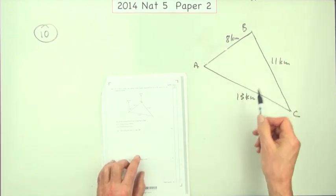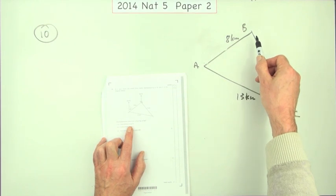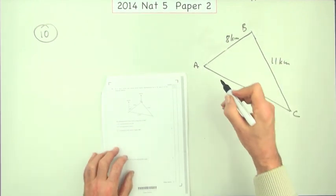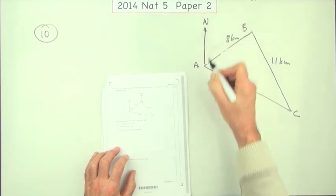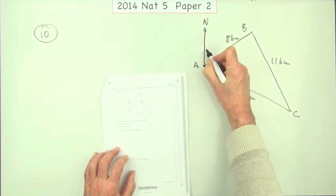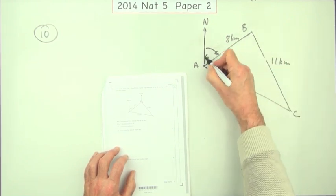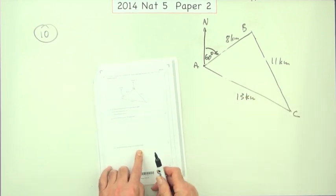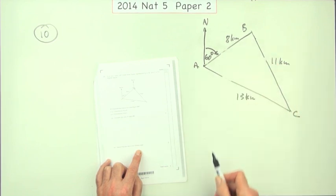Instead, it would simply have said: B is 8 kilometres from A on a bearing of 060 degrees. And you'd have to know that means establish north from A, and then the angle clockwise until you're facing towards B will be 60 degrees. The final part of the question would have been: what is the bearing of C from B?